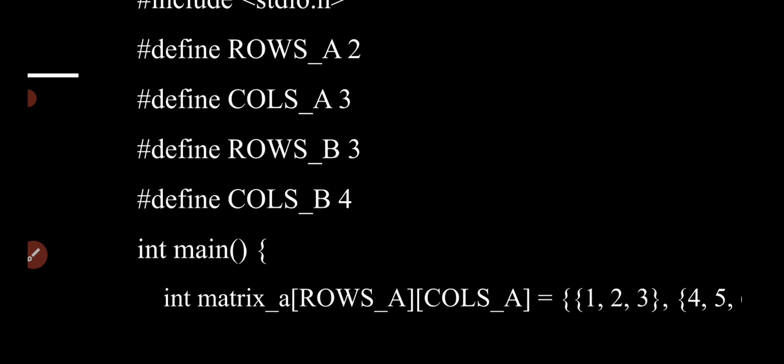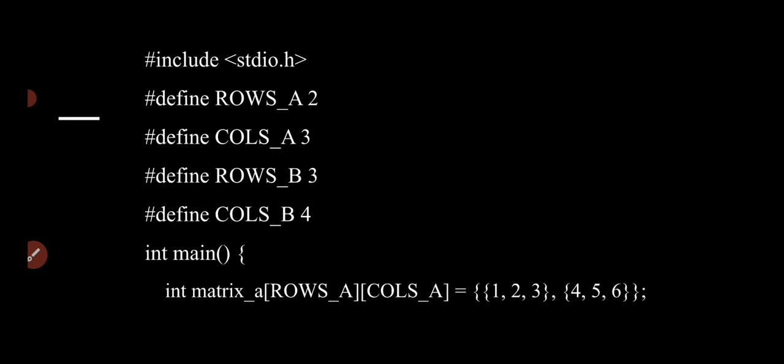This is one way of matrix initialization — we are assigning values directly to the matrix instead of getting input from the screen using scanf. This works for a constant matrix. To declare: integer A[ROWS_A][COLS_A] = {{1, 2, 3}, {4, 5, 6}}. That means 1, 2, 3 is the first row and 4, 5, 6 is the second row. We have 2 rows and 3 columns.